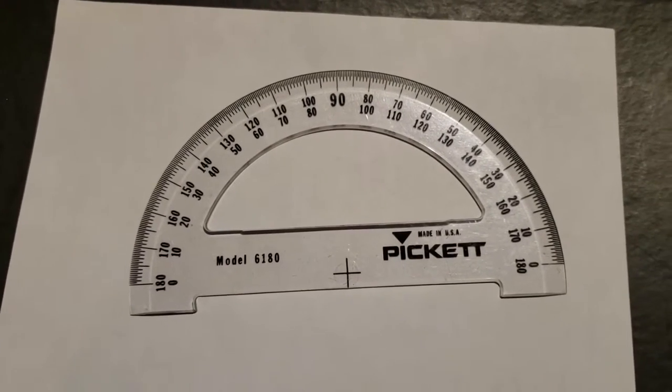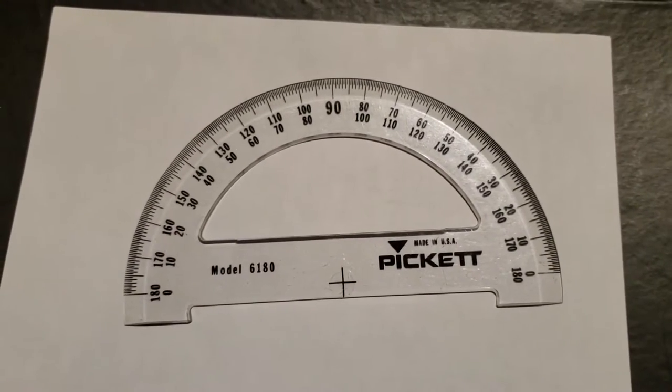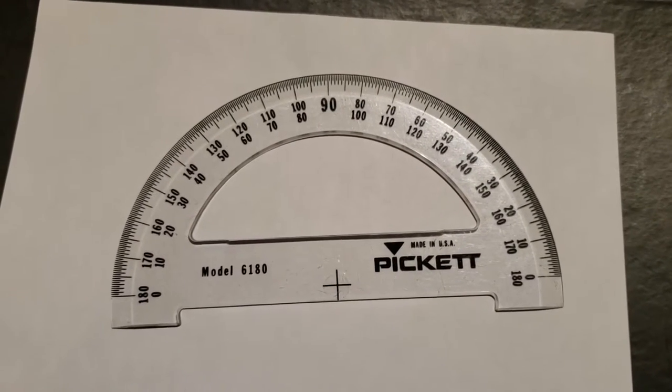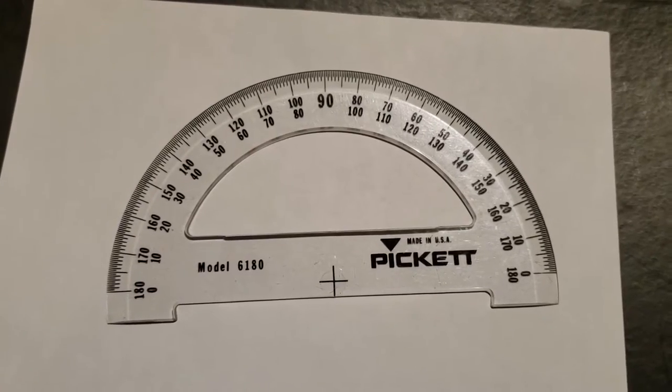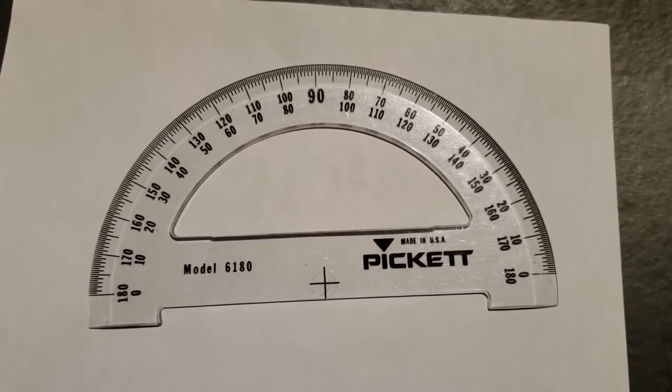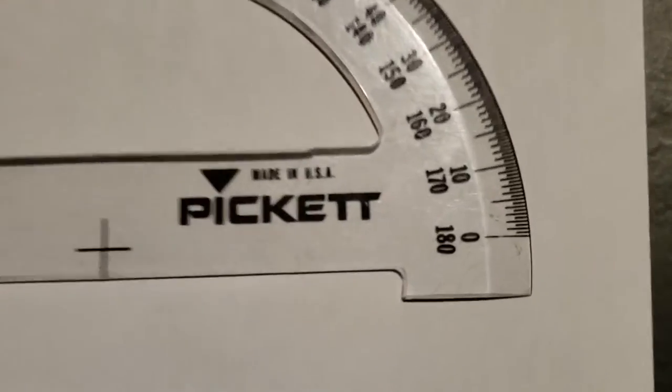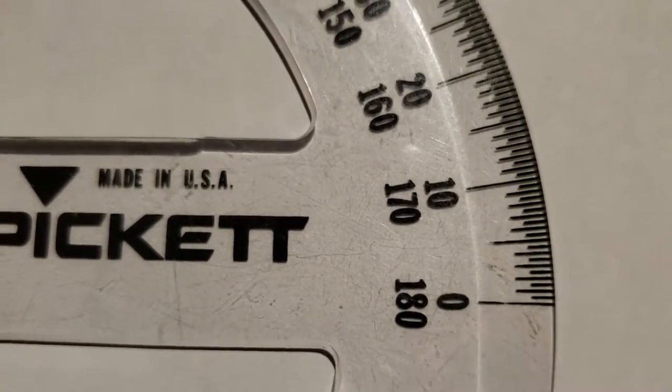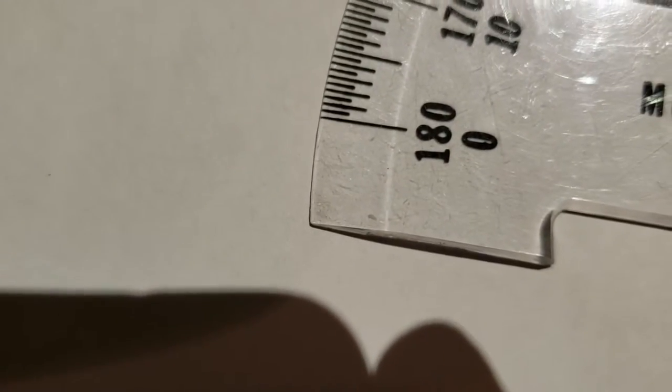A circle has 360 degrees, and this is a half circle, so how many degrees can we measure with this? Well, you could divide 360 by 2, or you can just look at it. It goes all the way from 0 to 180.